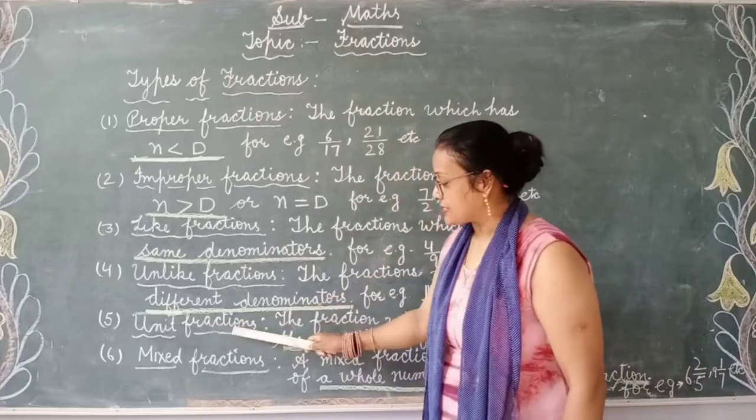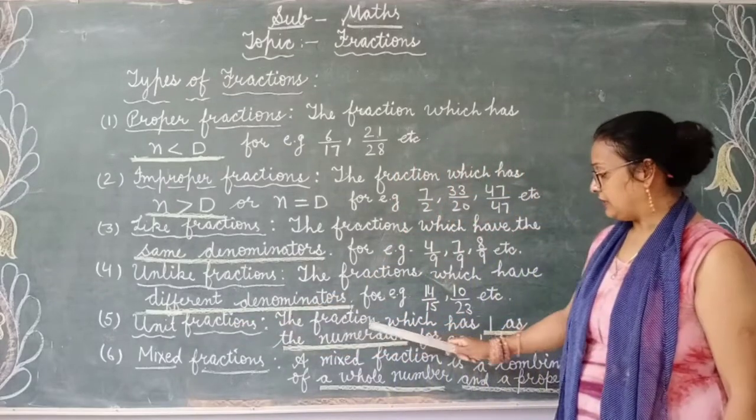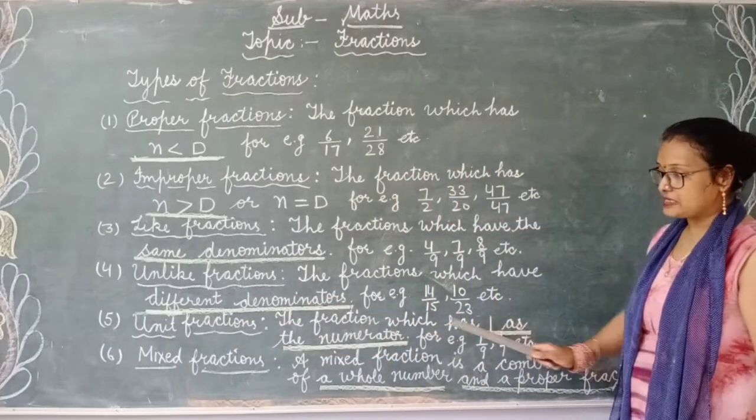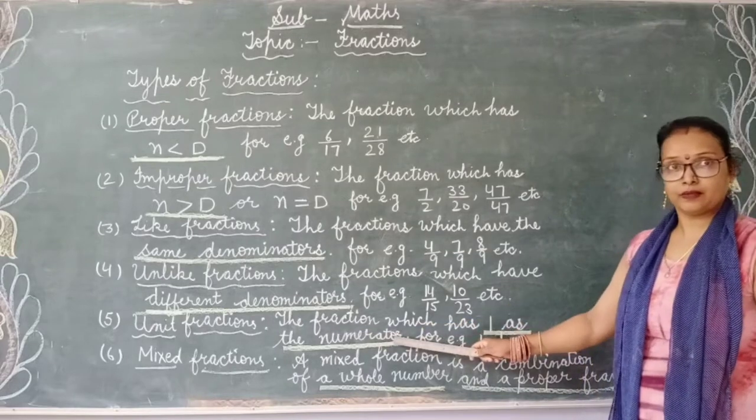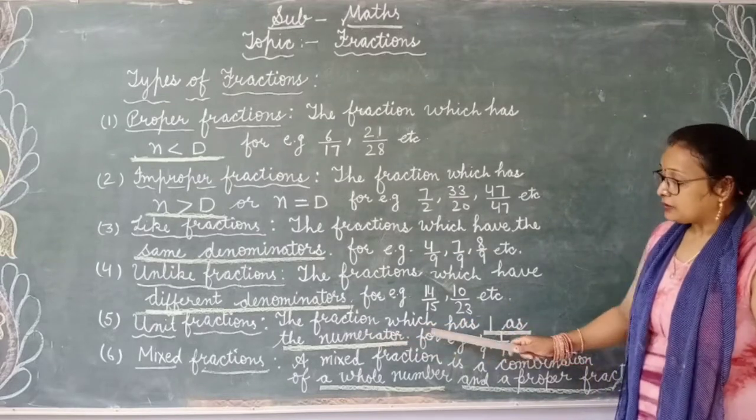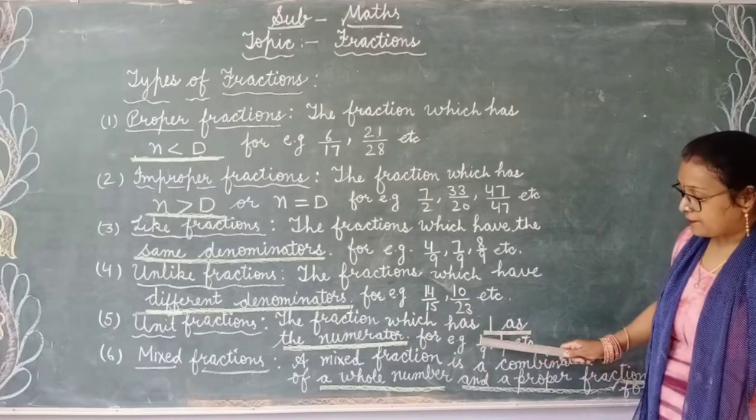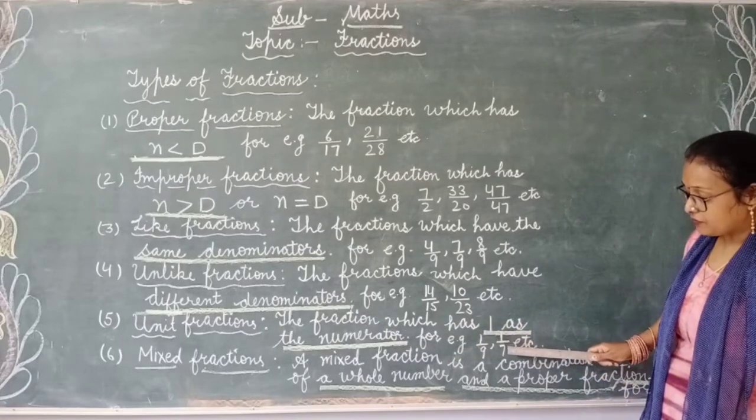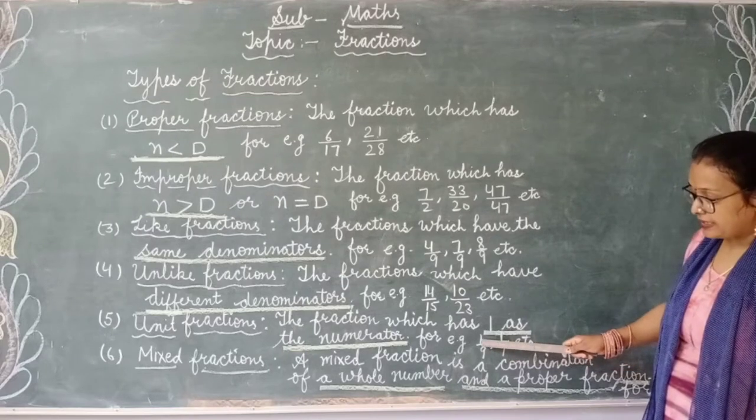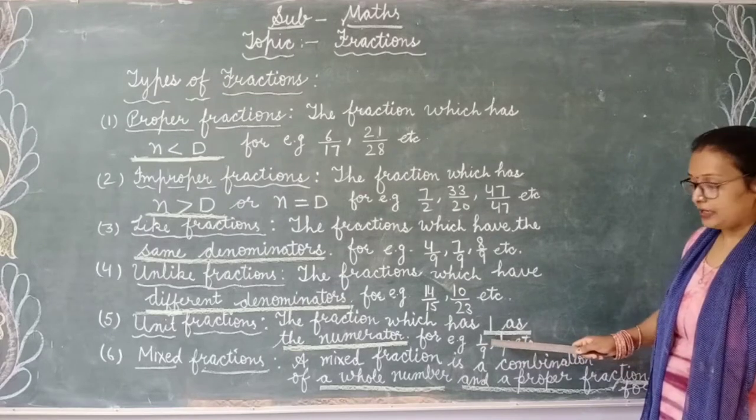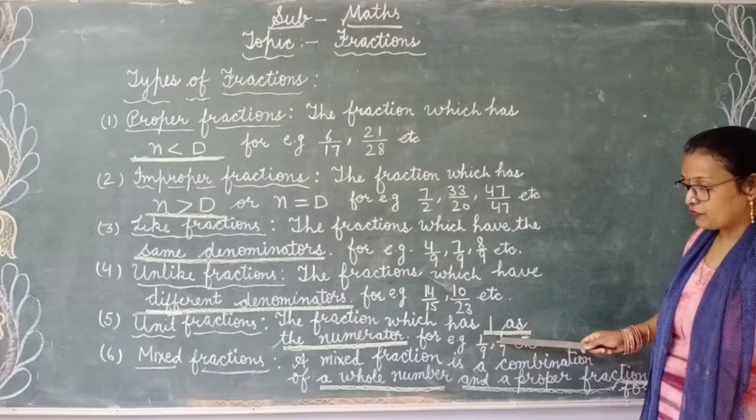Next is unit fractions. The fraction which has 1 as the numerator. Numerator is 1 always. For example, 1 upon 9, 1 by 7. Here numerator is 1 in both fractions.